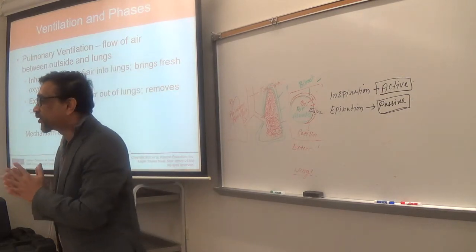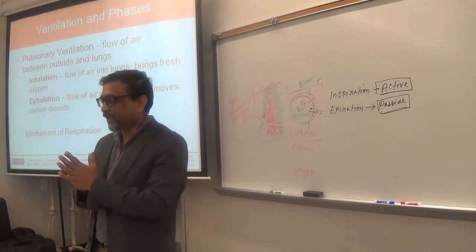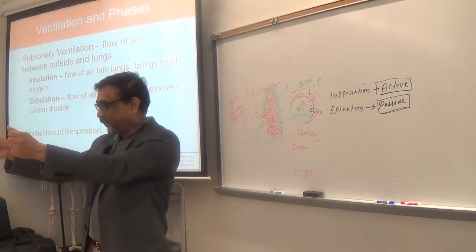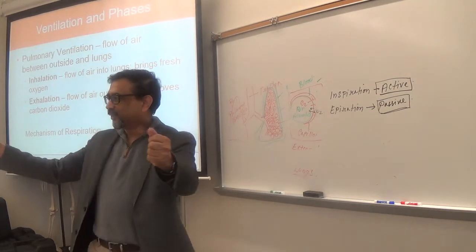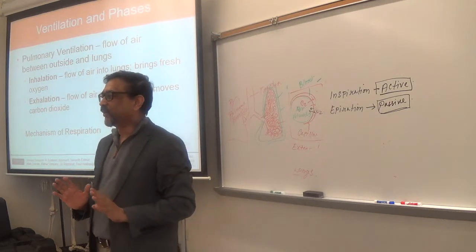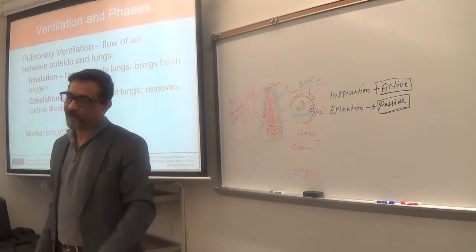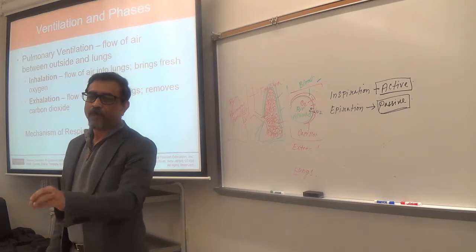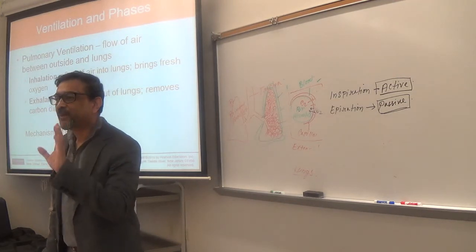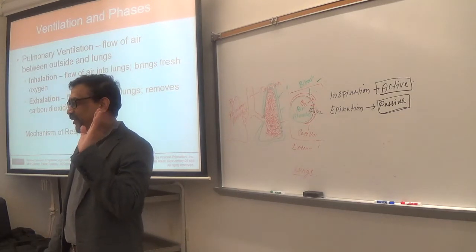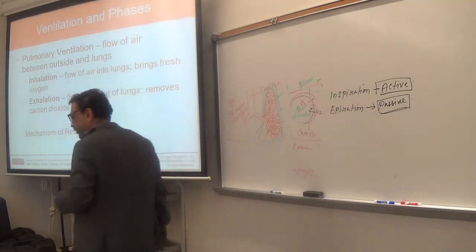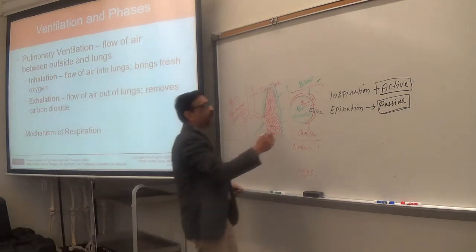To expand the elastic lung you need force or energy; to recoil it you just release the pressure. The force for expanding the lung is given by the respiratory muscles. The respiratory muscles that help in inspiration are the diaphragm and the intercostal muscles.